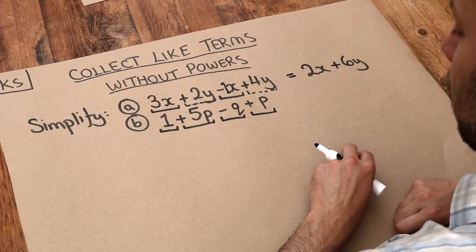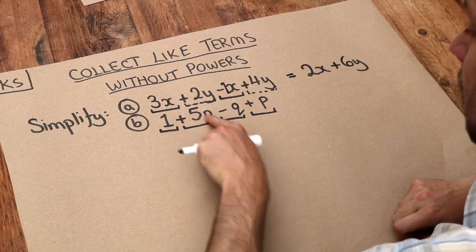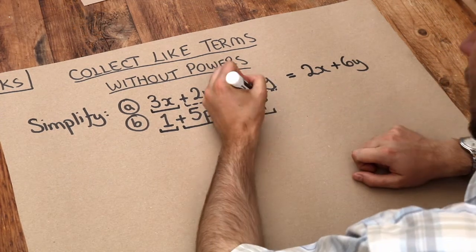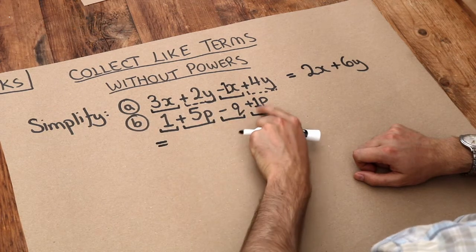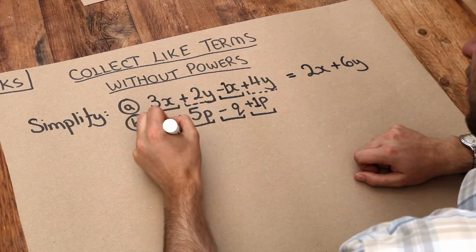Now let's concentrate on the p terms first. We've got 5p here and we've got 1p here. We just put that one on the front. So five lots of p plus one lot of p is six lots of p.